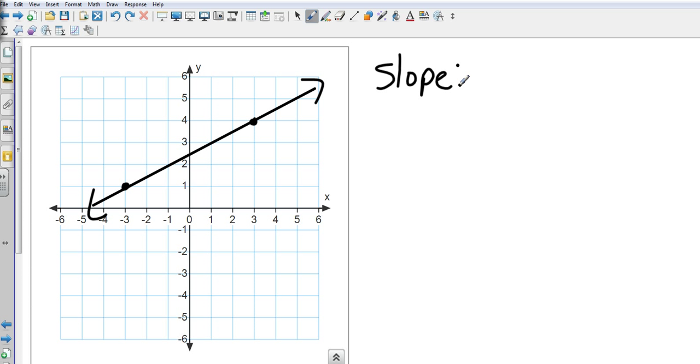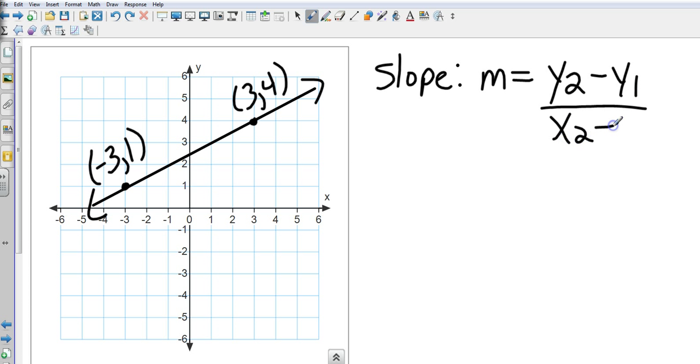Number one, you can find the coordinates. This coordinate is 3, 4. This coordinate is negative 3, 1. And I can take those coordinates and put them in my slope formula. Y2 minus Y1 all over X2 minus X1. So that's going to be 4 minus 1 all over 3 minus a negative 3. That's 3 over 6, which is 1 half. That's one way to do it.